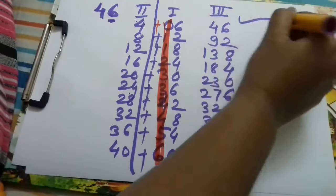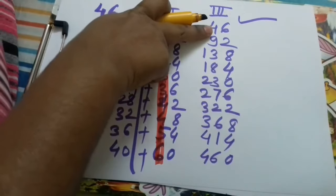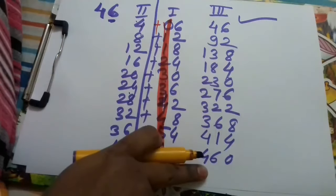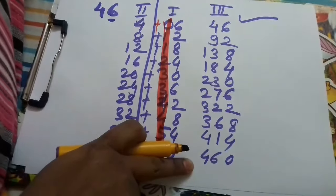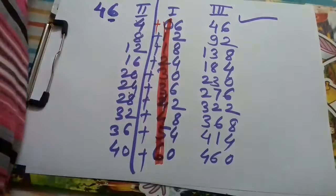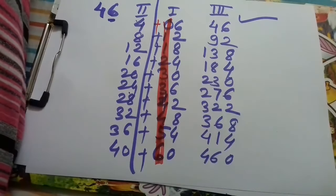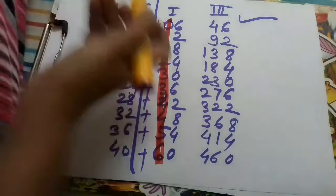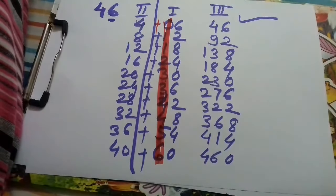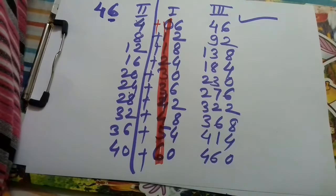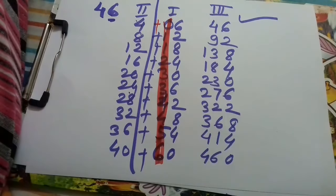This is the table of 46. You can just check it out with the help of a calculator. This is a very easy trick, a very easy method to prepare a table of any two digits. You can calculate from 11 to 99.